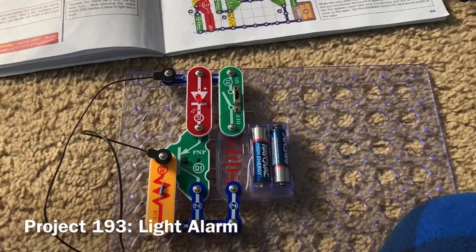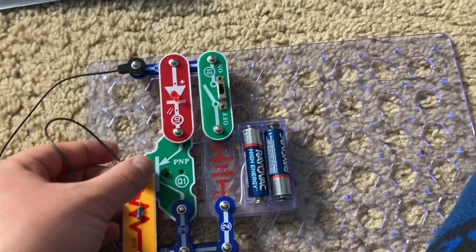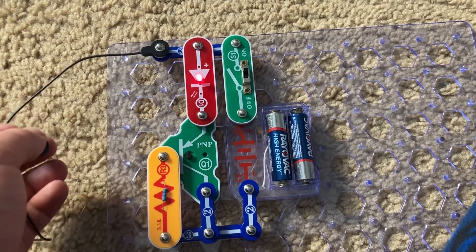Project 193 is light alarm. When I disconnect the black jumper wire, the red LED comes on.